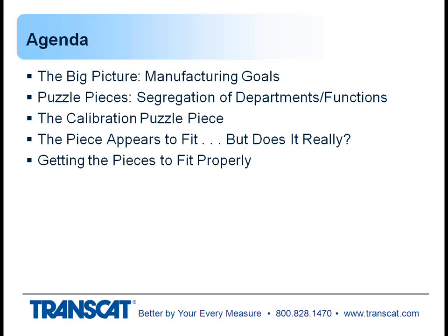We're going to cover what the manufacturing goals are, talk about how things get segregated as different people in a company are responsible for different functions and departments, and then the piece of the puzzle that is all about the calibration support piece — sometimes it appears to fit, sometimes it really doesn't fit but looks like it should. Then we'll follow up with how to make sure you get the pieces to fit properly.